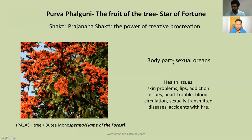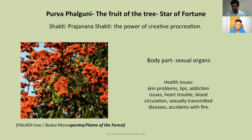The body part associated with Purva Falguni is the sexual organs. The botanical name is Monosperma. The lord in Vimshottari Dasha is Shukra — Venus. Look at the correlation: sperm, procreation, creativity — directly related with the botanical name of the tree.